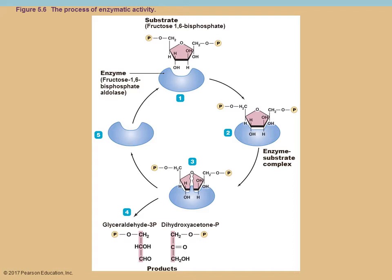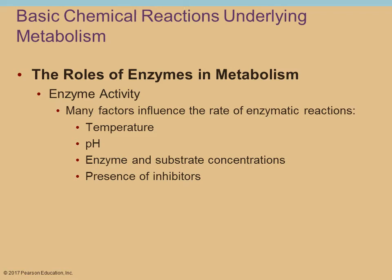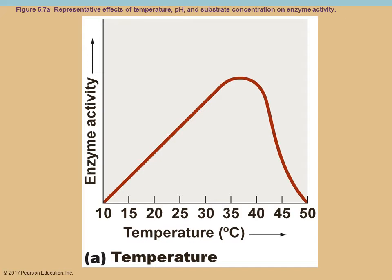There are many things that can influence the rate of the reaction. Enzymes are proteins, so environmental factors like temperature and pH can affect them. The concentration of both the enzyme and the substrate will help determine the rate of the reaction, as will the presence of inhibitors. Temperature and pH show a classic bell-shaped curve — there will be a range at which the enzyme is active, and within that range there's a peak or optimum point.